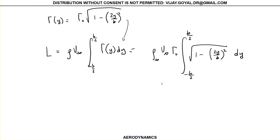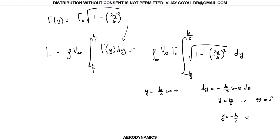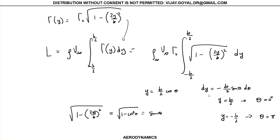To solve this integral, we use substitution of variables. Let y equal to b over 2 times cosine of theta, then dy will equal to minus b over 2 times sine of theta d-theta. Your limits of integration change: from b over 2 to theta equals 0, and from minus b over 2 to theta equals pi. The integrand 1 minus (2y/b) squared becomes 1 minus cosine squared theta, which is sine squared theta.